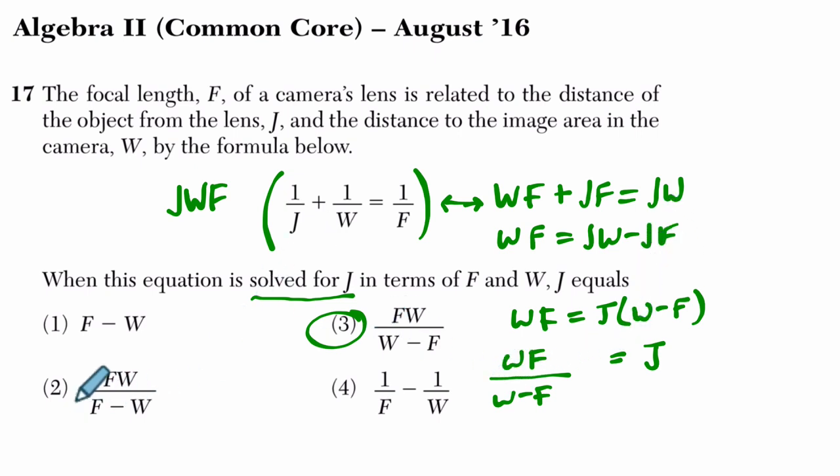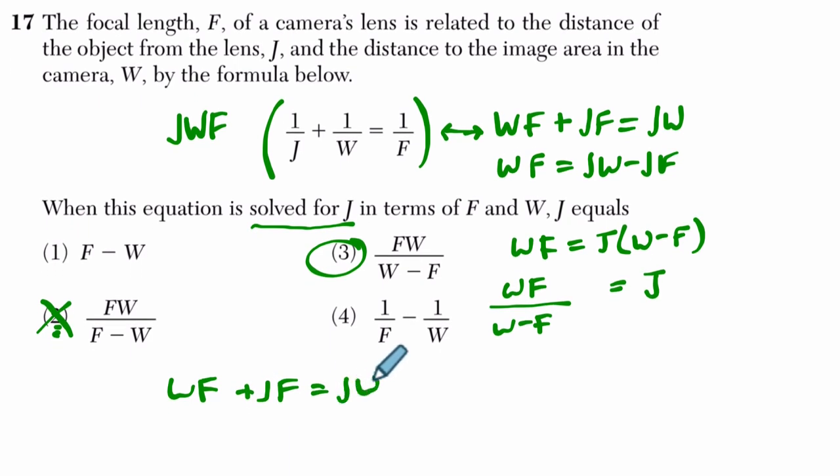So initially I had choice two in it. And I'll just show you my mistake. I'm realizing it right now. So w, f, I wrote. This is incorrect, but I'll show you. W, f plus j, f equals j, w. I start off the same way.